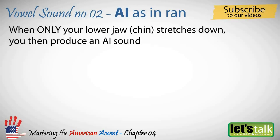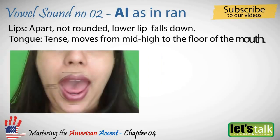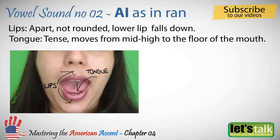When only your lower jaw or your chin stretches down, you then produce an A sound. The lips are apart and not rounded, the lower lip falls down, and the upper lip remains almost stable. The tongue is tense and moves from mid-high to the floor of the mouth.